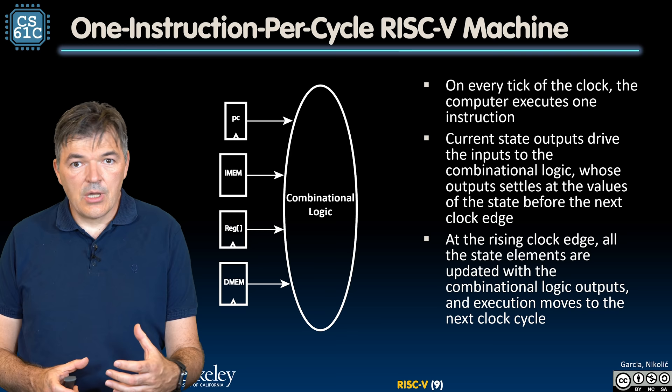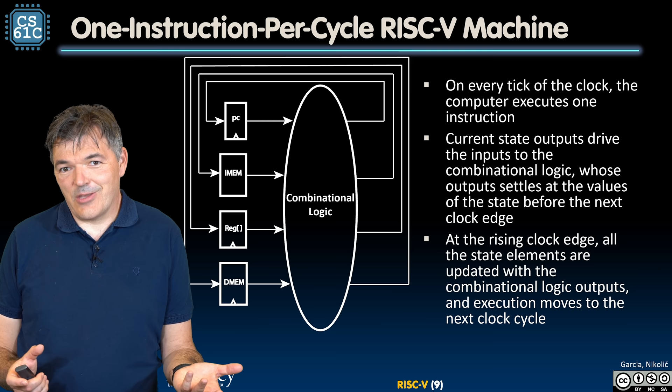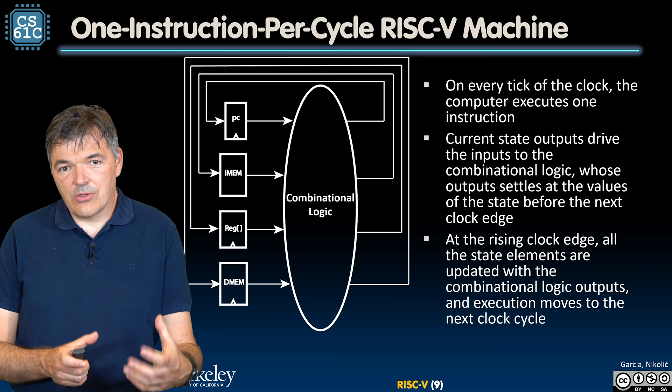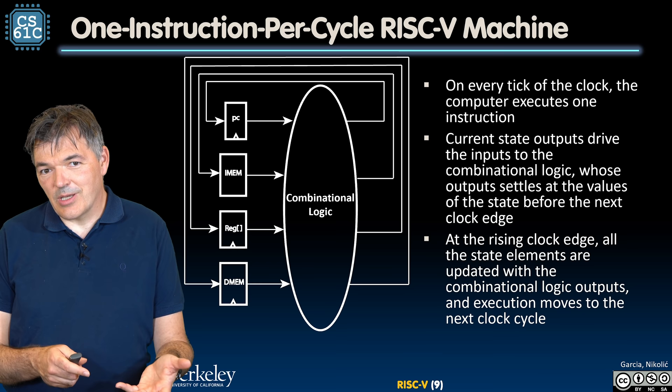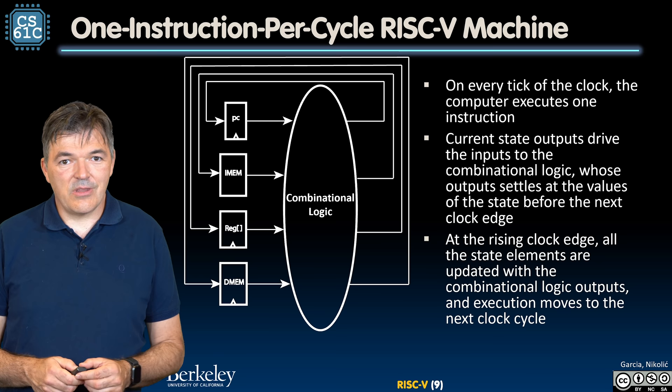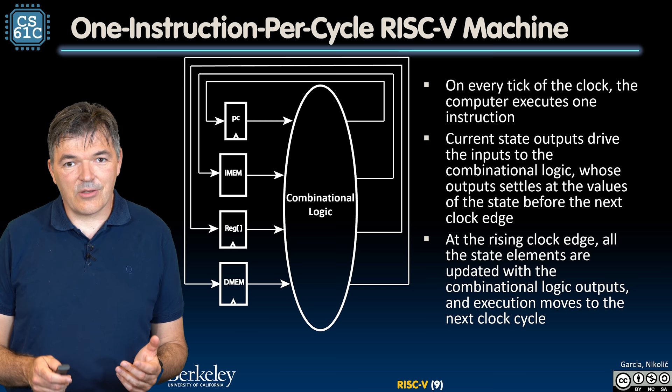We can have a different bubble of combinational logic for every instruction. One can imagine building a processor that way — every single one of the 30-something instructions in RV32I would have its own dedicated bubble of logic. Then we would essentially use multiplexers, where the select input corresponds to the type of instruction being executed, and we would update state based on the outputs of these different combinational logic blocks.